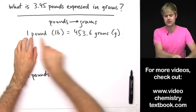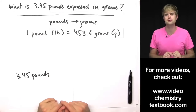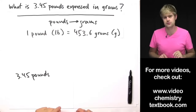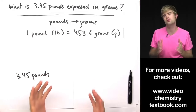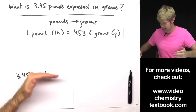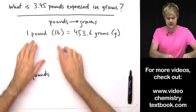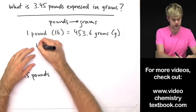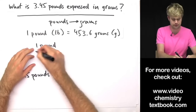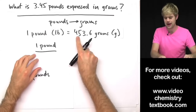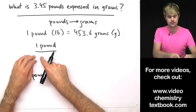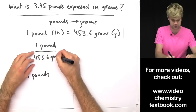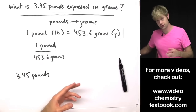Now we have this statement that tells us how pounds relate to grams. We're going to use it to write two conversion factors. A conversion factor is expressed as a fraction with a top and a bottom. We're going to take one pound and put it on the top of the fraction, and then 453.6 grams on the bottom. That's one of the two conversion factors.